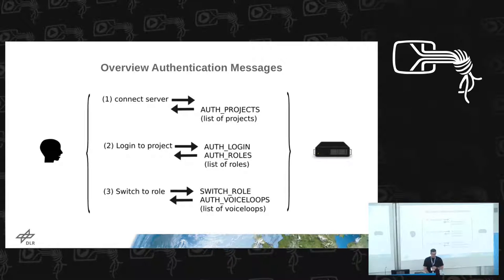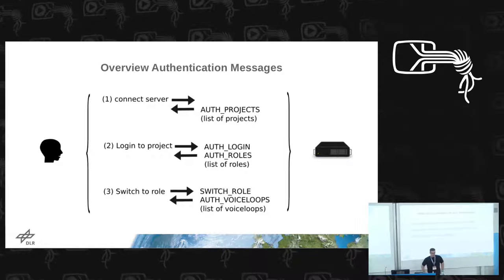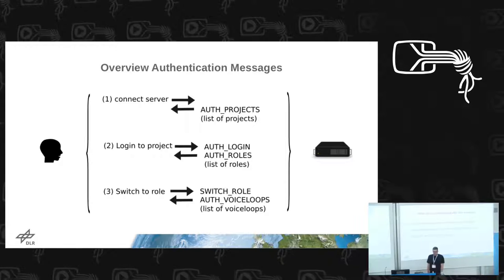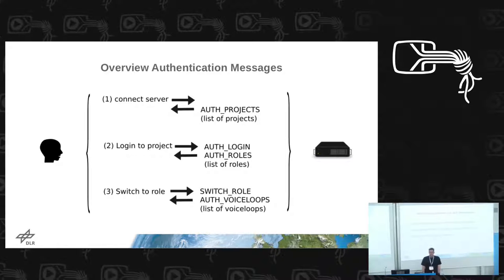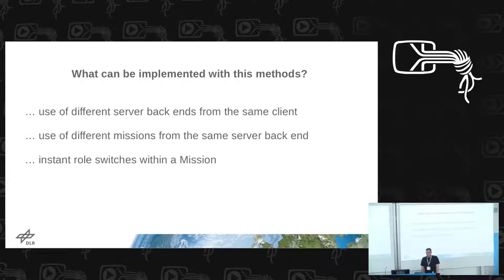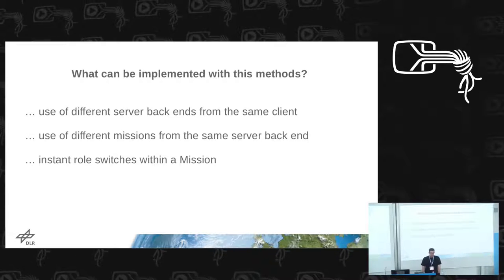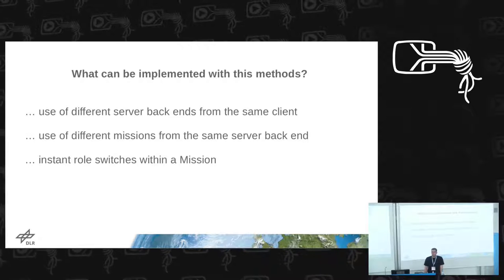With these three authentication message types, we can switch between different server backends from the same voice distribution system. We can also perform instant role switches within a mission - for example, when someone responsible for power also needs to cover IT systems on board because the other person is unavailable. He can do an instant role switch.